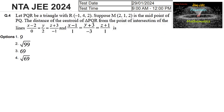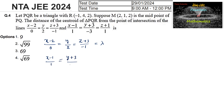Now let's find the point of intersection of two lines: (x−2)/0 = y/2 = (z+3)/(−1) = λ, and (x−1)/1 = (y+3)/(−3) = (z+1)/1 = μ.